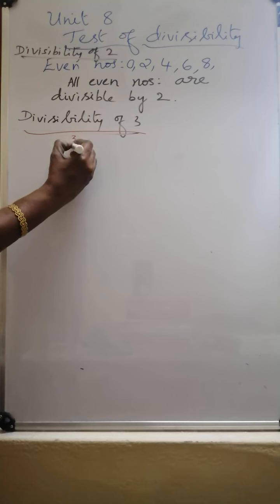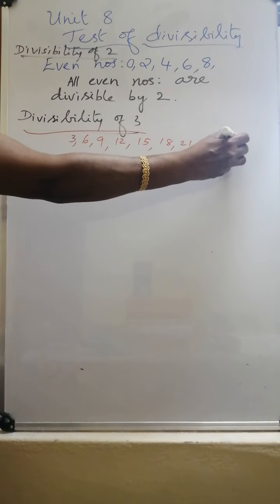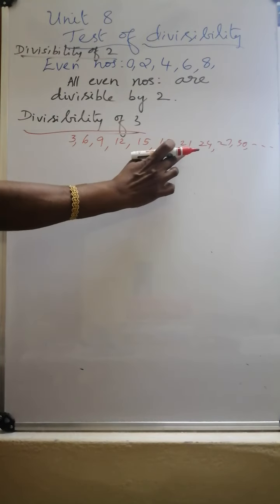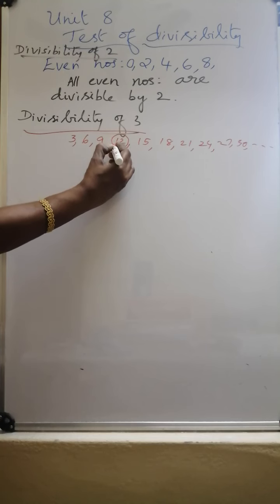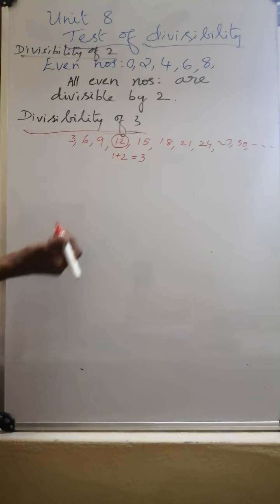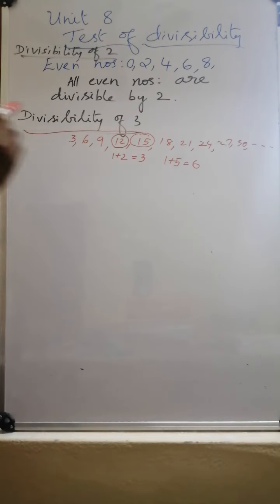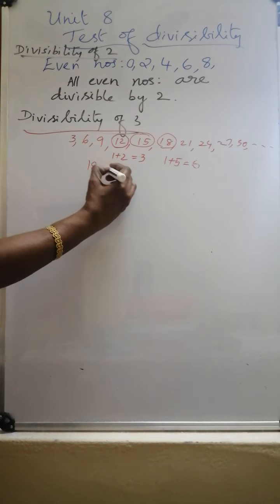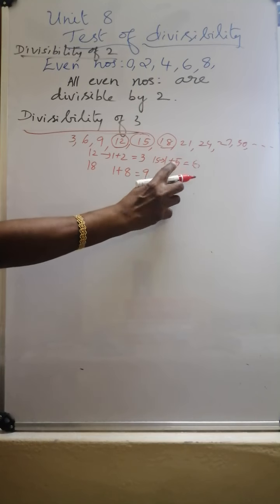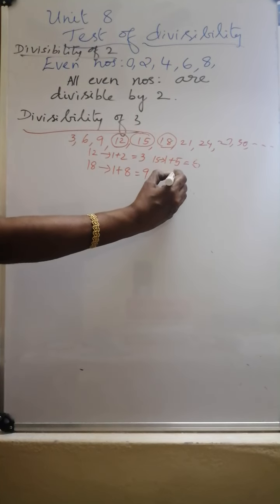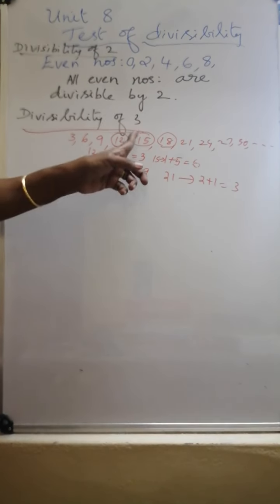The multiples of 3 are 3, 6, 9, 12, 15, 18, 21, 24, 27, 30, etc. These numbers are divisible by 3. But in the case of larger numbers, when you take a 2-digit number in the 3 table — for example, 12: 1 plus 2 is 3; 15: 1 plus 5 is 6; 18: 1 plus 8 is 9 — the sum of the digits is a multiple of 3.